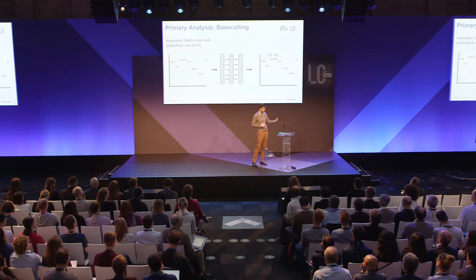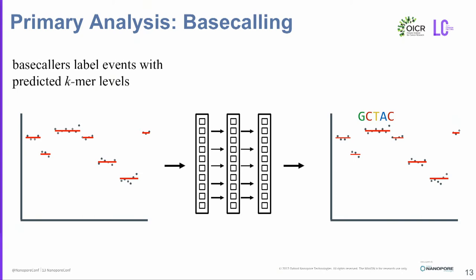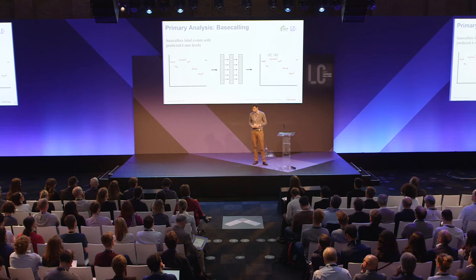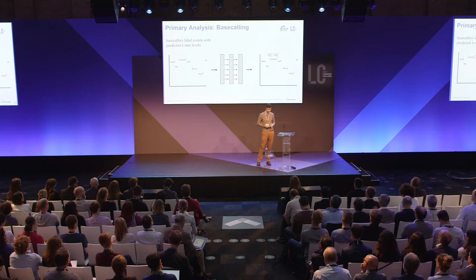You'll probably also hear quite a lot about base calling over the next few days. Base calling is a primary analysis task for nanopore data — it's the process of going from current measurements into a DNA sequence, inferring what DNA sequence passed through the pore. The dominant way of doing base calling now is using recurrent neural networks, though for a while it was hidden Markov models. They basically work the same way: they take this vector of events with means, standard deviations, and durations, put it through the probabilistic model, and apply a label to each event.